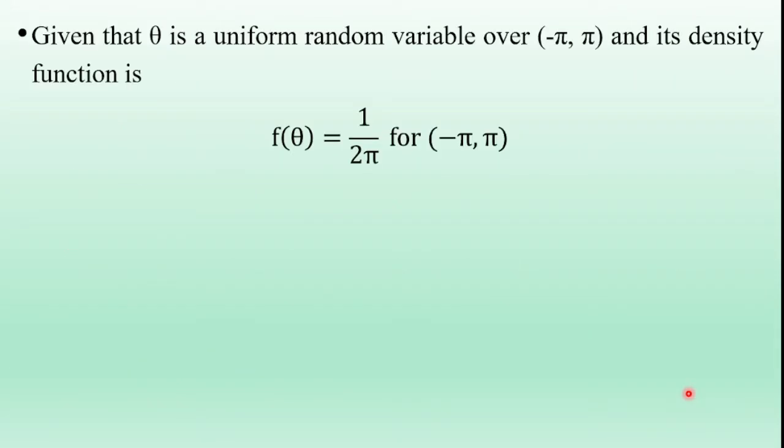Given that θ is a uniform random variable over (−π, π), its probability density function is f(θ) = 1/(π − (−π)), which equals 1/(2π) over (−π, π).